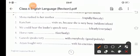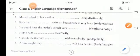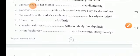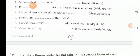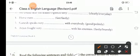She seldom visits us. Because she is busy, she cannot often visit us. So, the word will be seldom. Then, the third one is, we could hear the leader's speech very clearly. Horse runs fast. Ganesh speaks very dash with everybody. So, Ganesh speaks very politely. And, the fifth one will be sixth. Arjun fought very dash with his enemies. So, with the enemies, Arjun used to fight bravely.